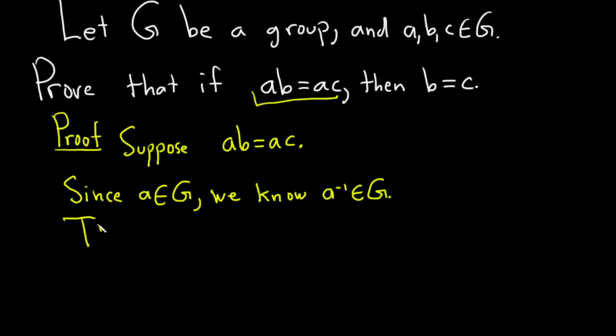So then what we'll do is basically multiply both sides of this equation on the left. And in order to get rid of the a, we have to use associativity now.